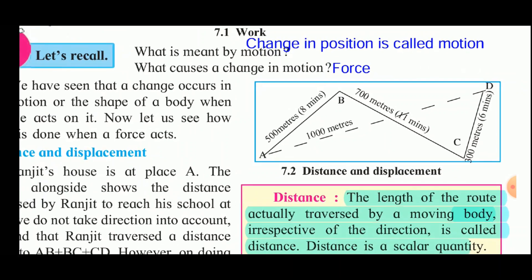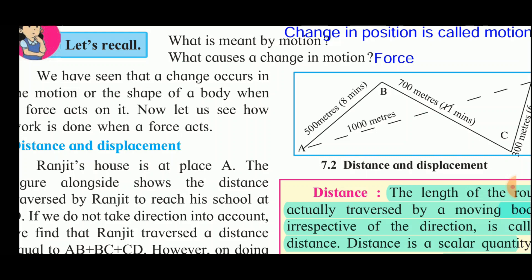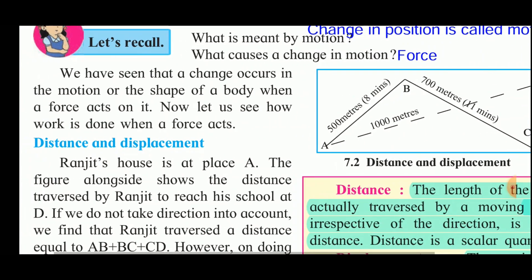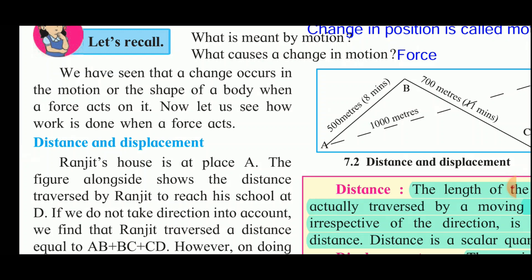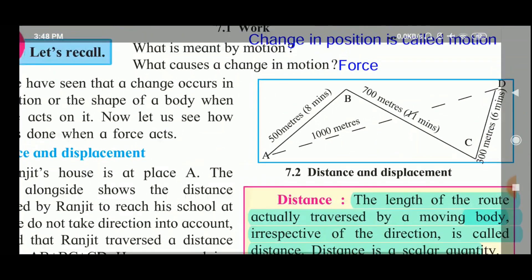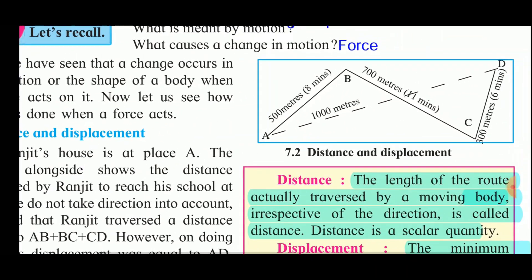From this figure we have to understand the difference between distance and displacement. Ranjit's house is at place A. The figure alongside shows the distance traversed by Ranjit in order to reach his school at D. If we do not take direction into account, we find that Ranjit traversed a distance equal to AB plus BC plus CD. However, his displacement is equal to AD.